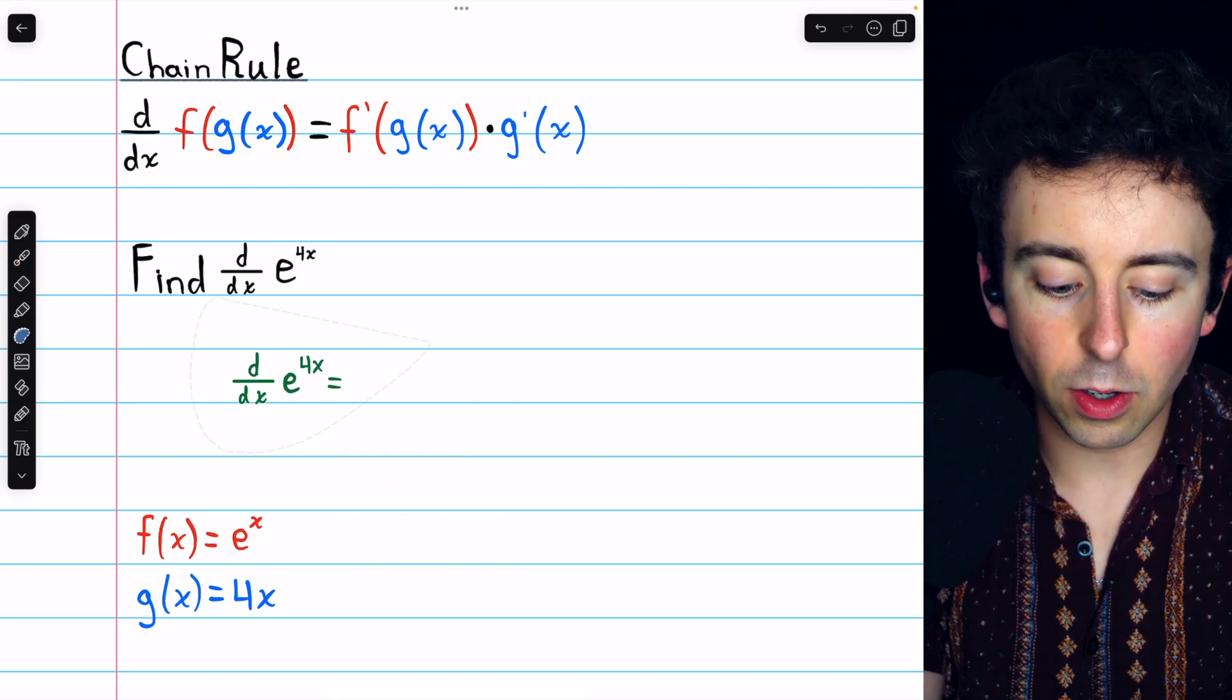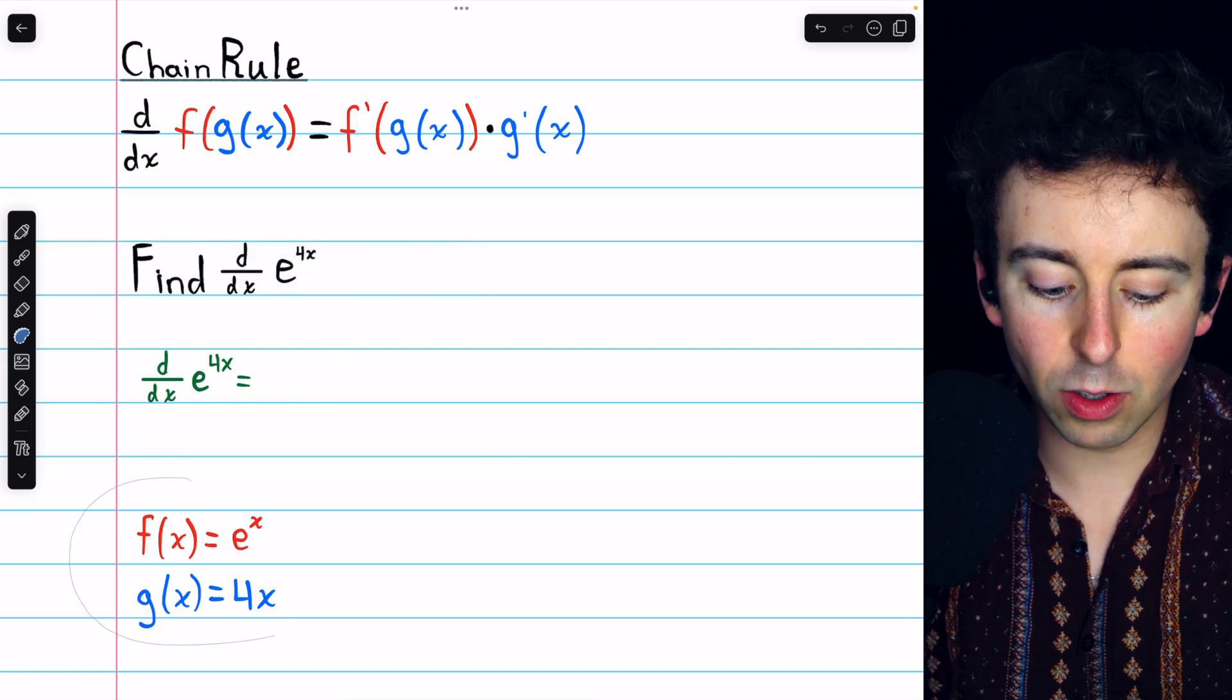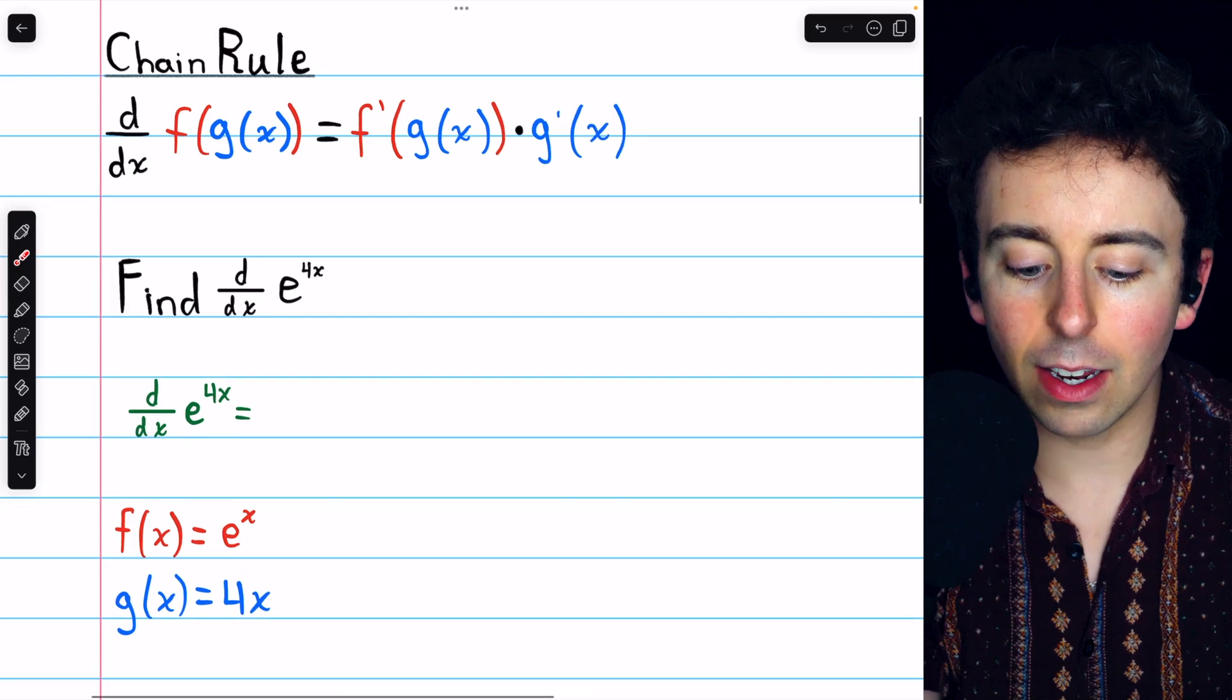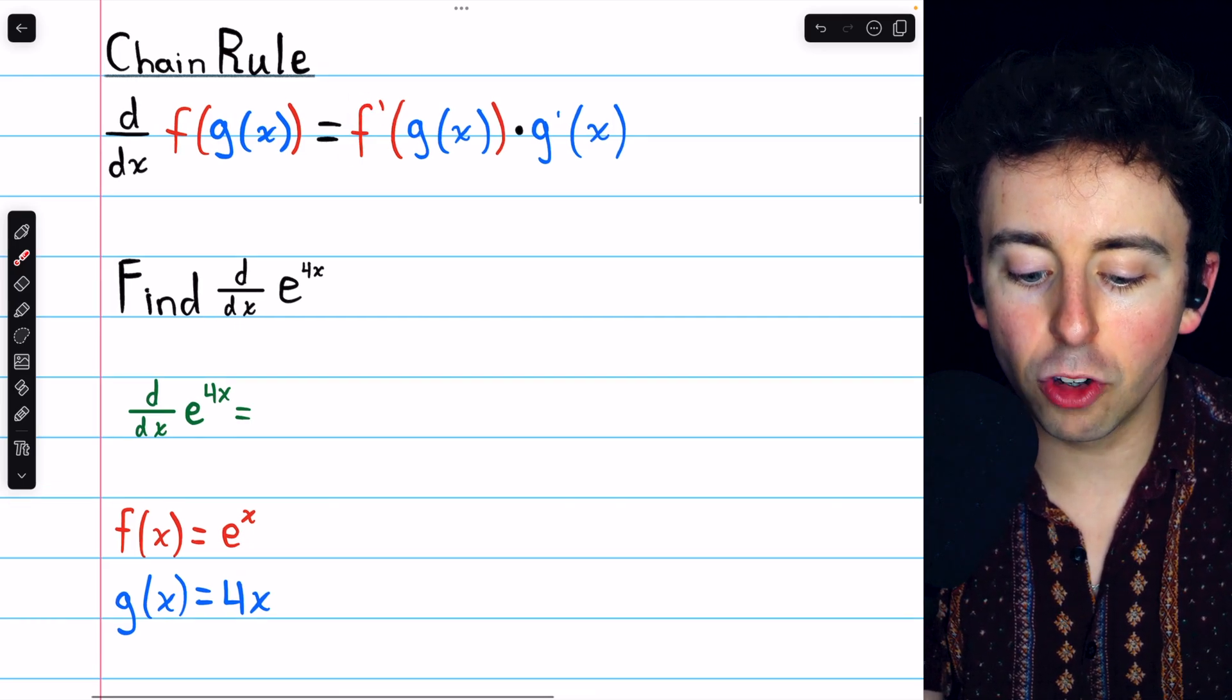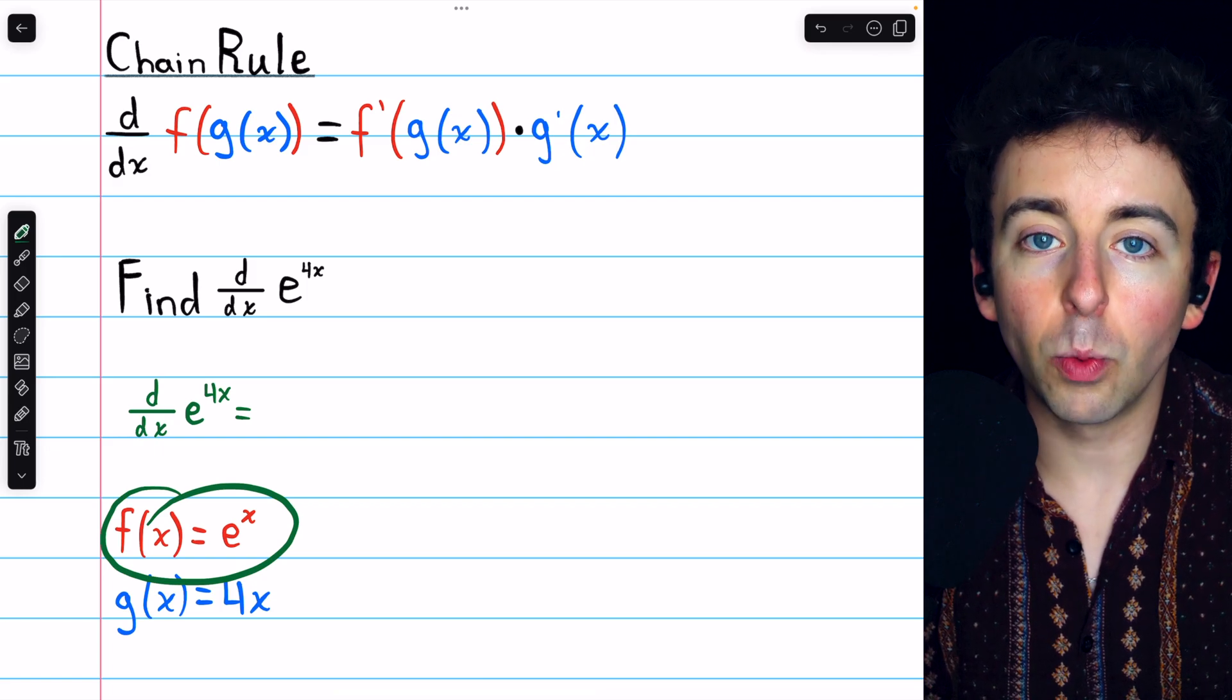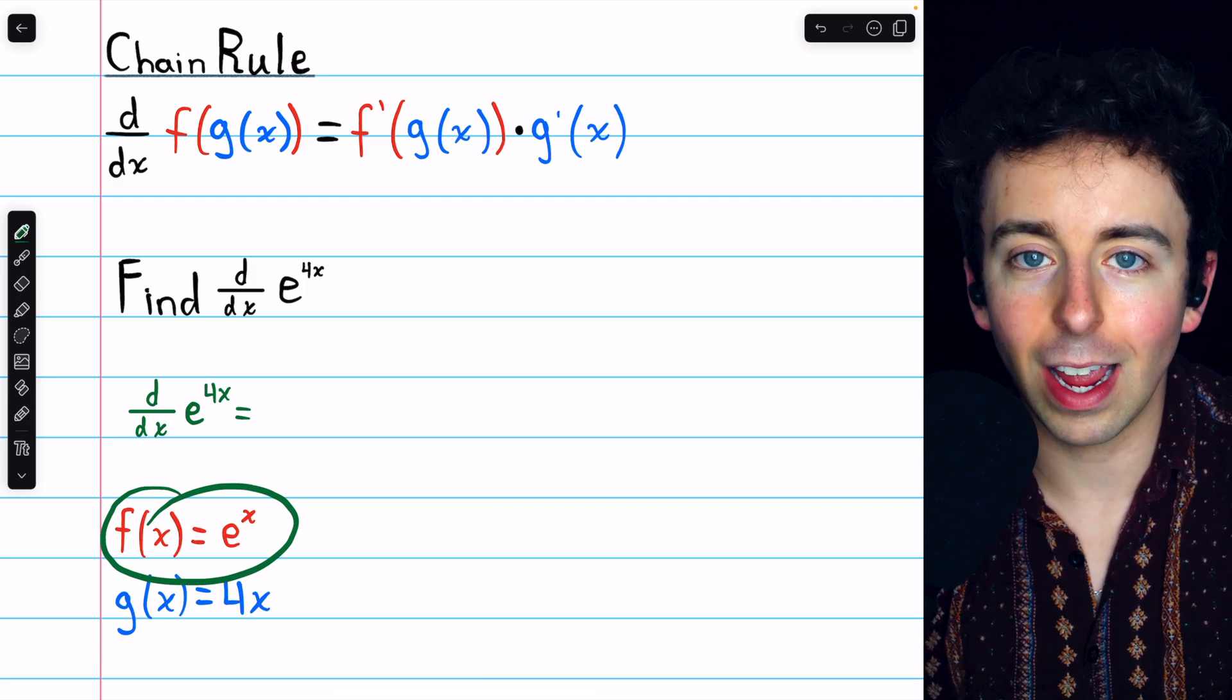Now we can use the chain rule to find the derivative of e to the 4x. By the chain rule, we must begin with f prime of g of x, so the derivative of the outside function, with the inside function unchanged.